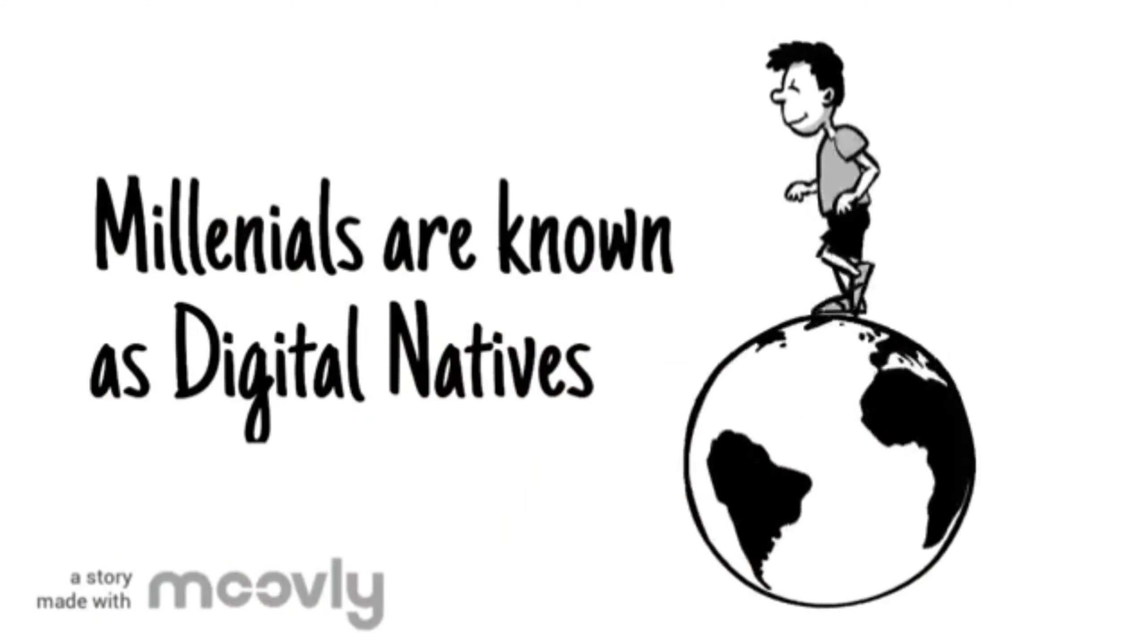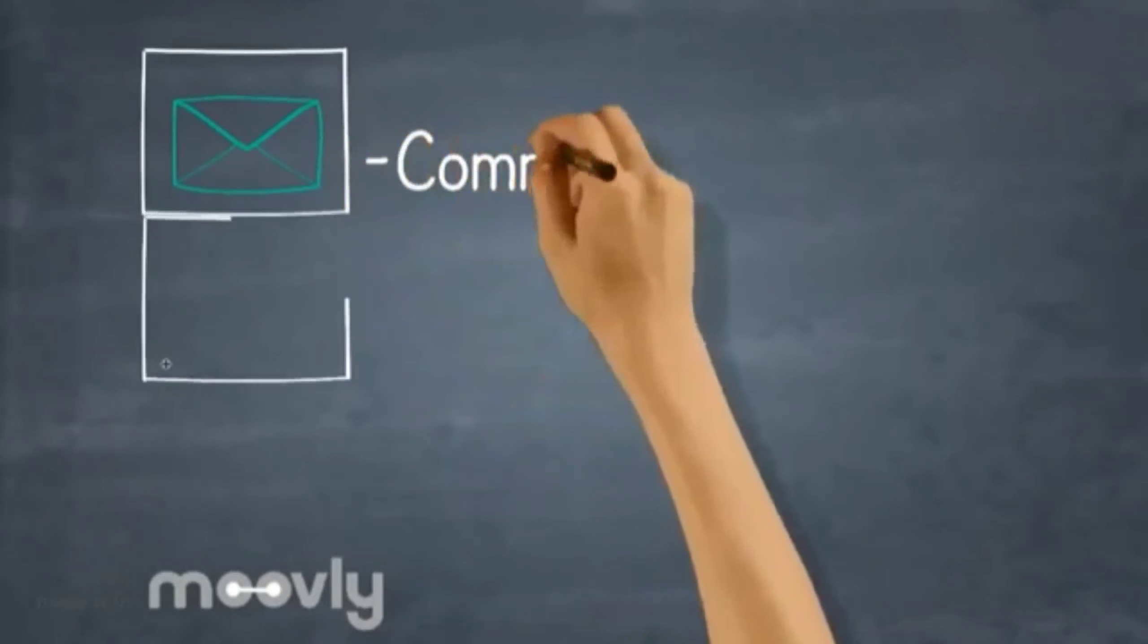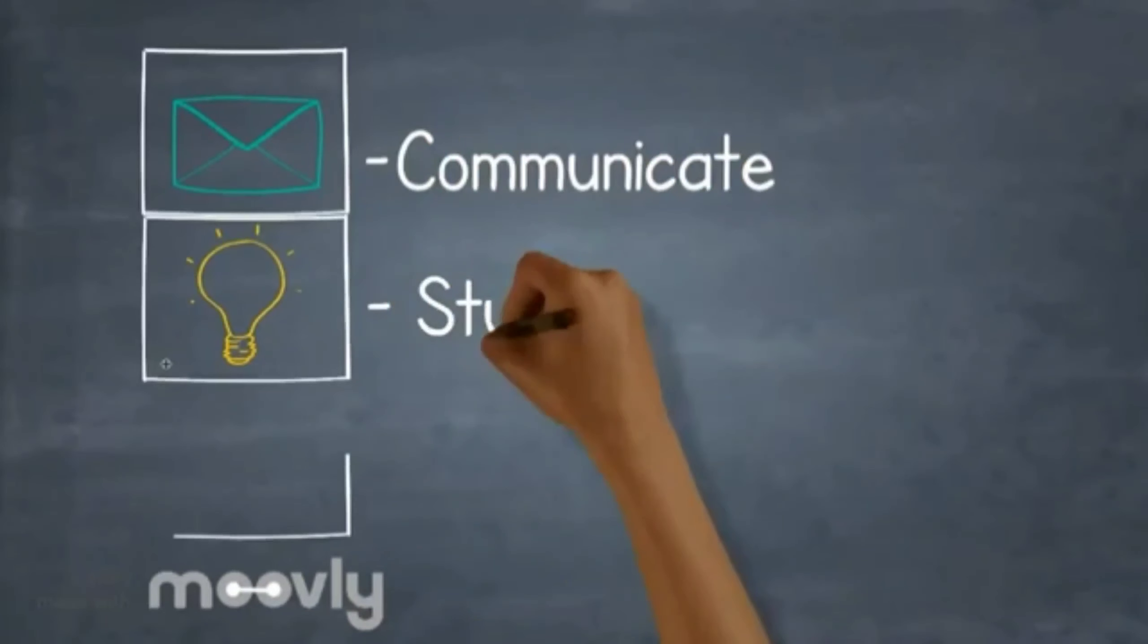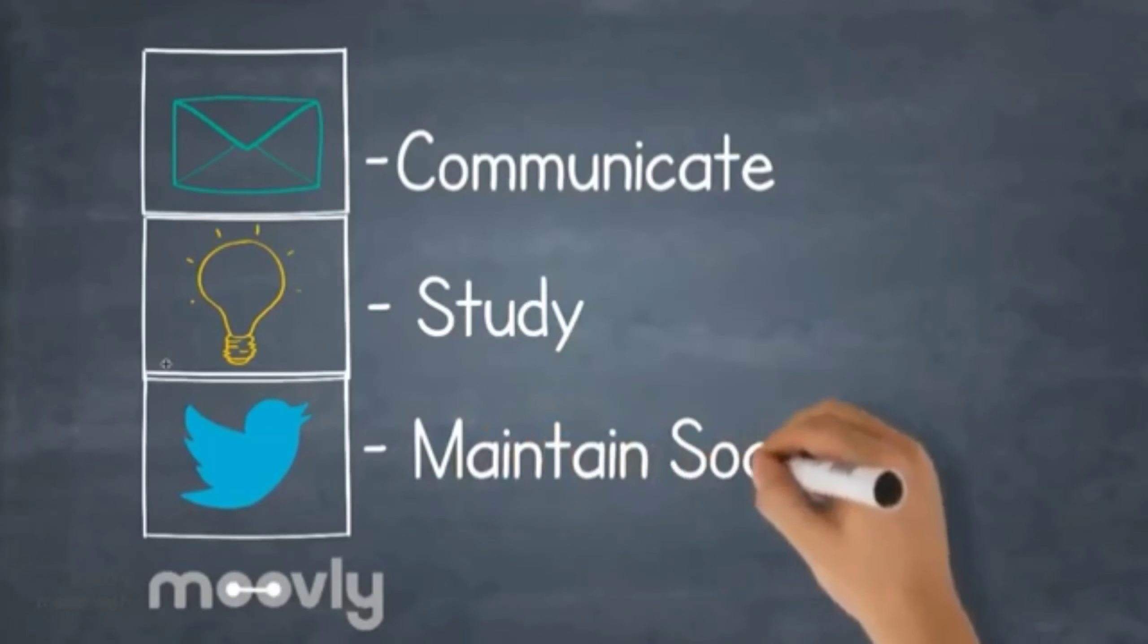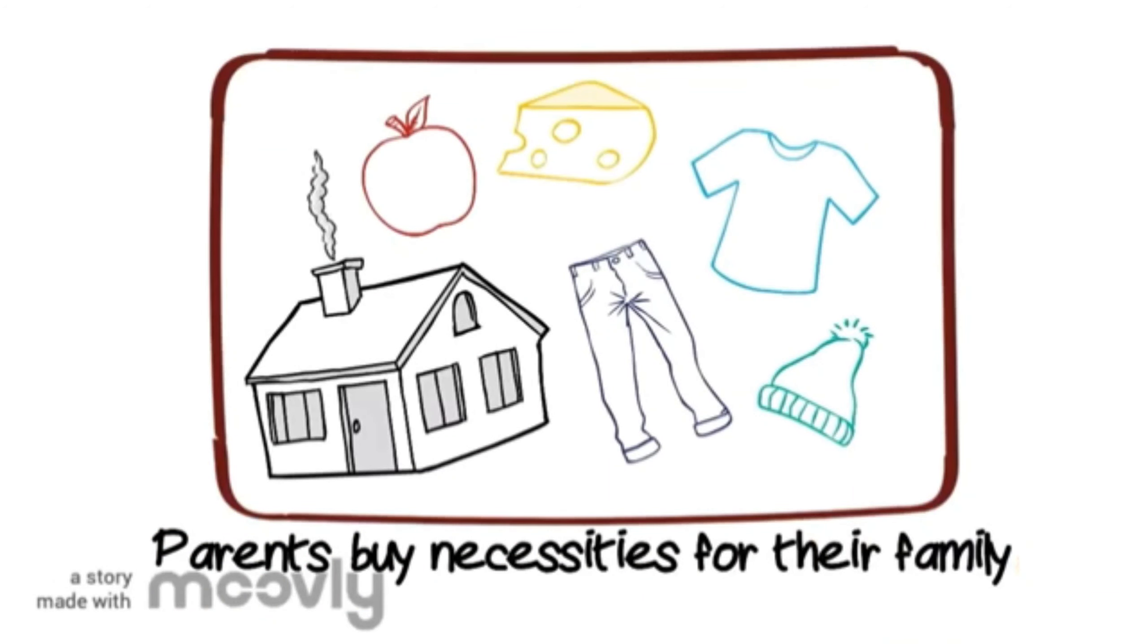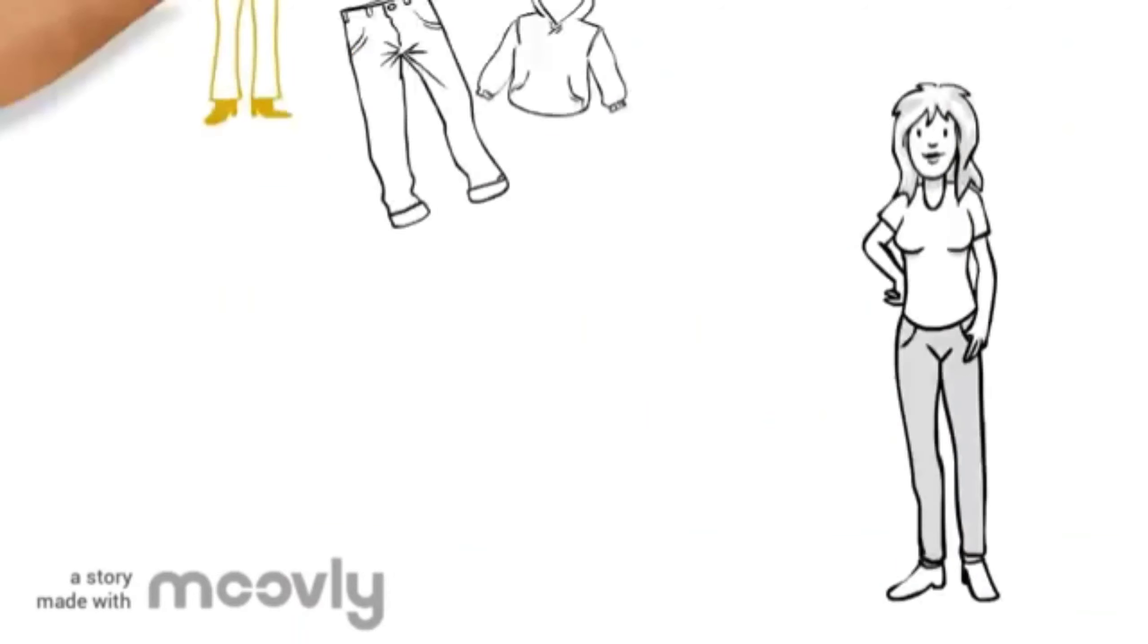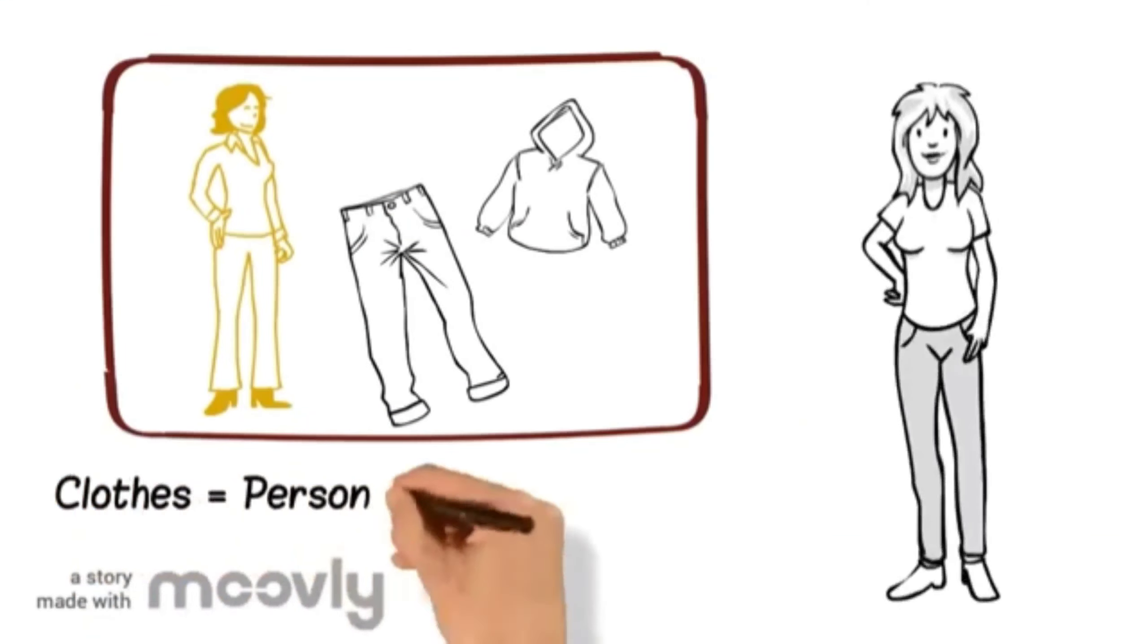They use these gadgets to communicate, study, and to a certain extent maintain a particular social status. Parents buy necessities for their family because it is symbolic of what they need to provide security. The clothes people wear manifest their personal style and comfort.